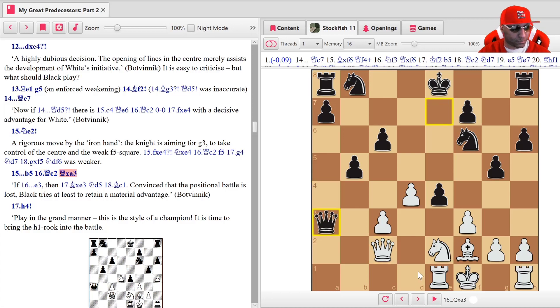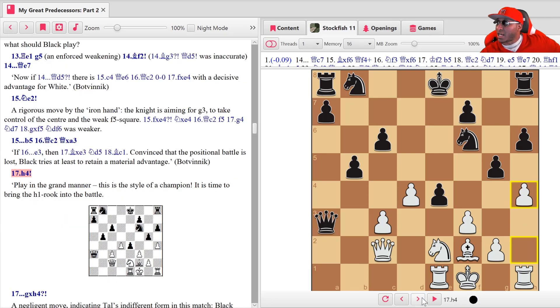Taking a look at this position, I love White's position. What would I play next? Knight g3 just stands out. I'll take c4. You could do pawn takes. Let's see what you play. Oh, h4! Wow, h4 guy, that is amazing. Play in the grand manner. This is the style of the champion. It's time to bring the h1 rook into the battle. So he's starting to take on g5 obviously, and the rook is undefended back here.